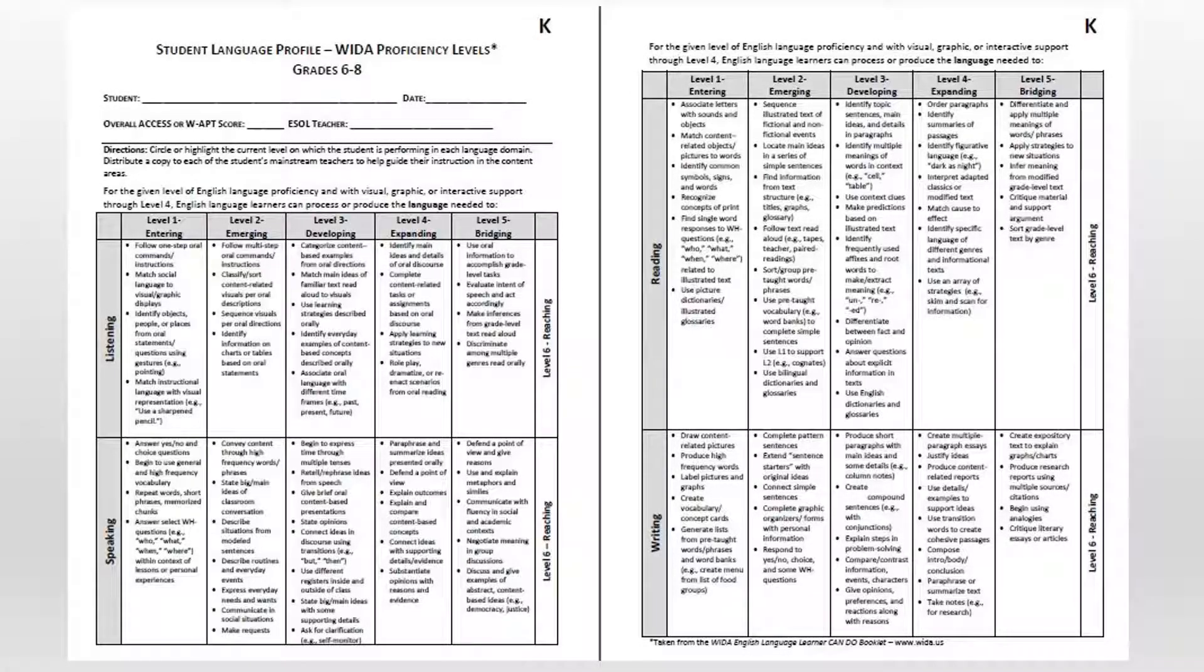Let's discuss the language proficiency levels. Level 1 indicates a student that is just entering their language acquisition journey. This would be either a student new to the country or is just learning English. Level 2 is an emerging student. This student is taking in lots of language and is now starting to produce that language back. A Level 3 student is now developing the language into meaningful structures. They are able to participate greatly in class and their confidence is starting to build.